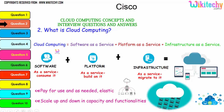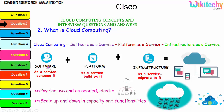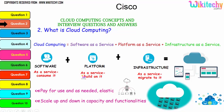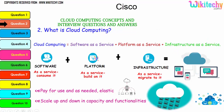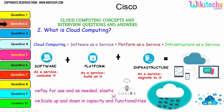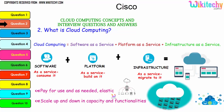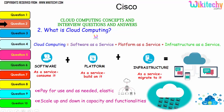Cloud computing encompasses Software as a Service (SaaS), where software is consumed as a service; Platform as a Service (PaaS), where the platform is a service; and Infrastructure as a Service (IaaS). The collaboration of software, platform, and infrastructure is referred to as cloud computing. The major advantage is pay-for-use — pay only for what you need. It is elastic: you can scale up and down in capacity and functionality.